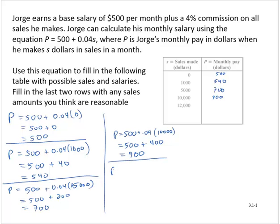If he makes $12,000 in sales, it would be 500 plus 0.04 times 12,000, which would be 500 plus 480. And so that would be 980.